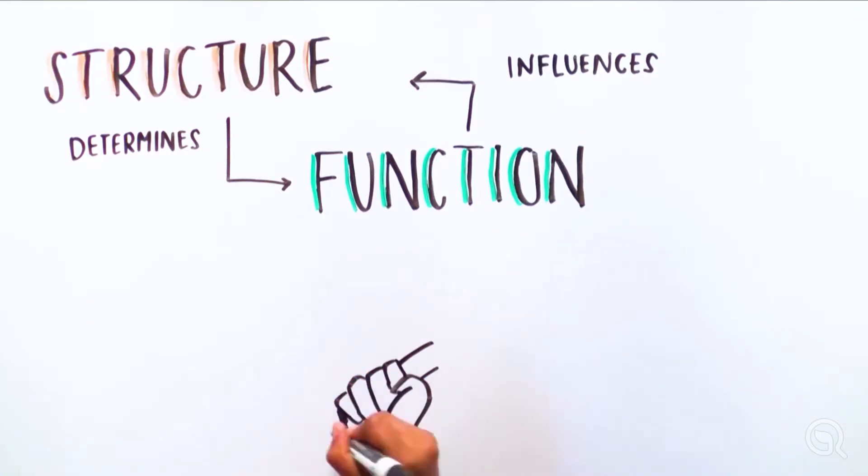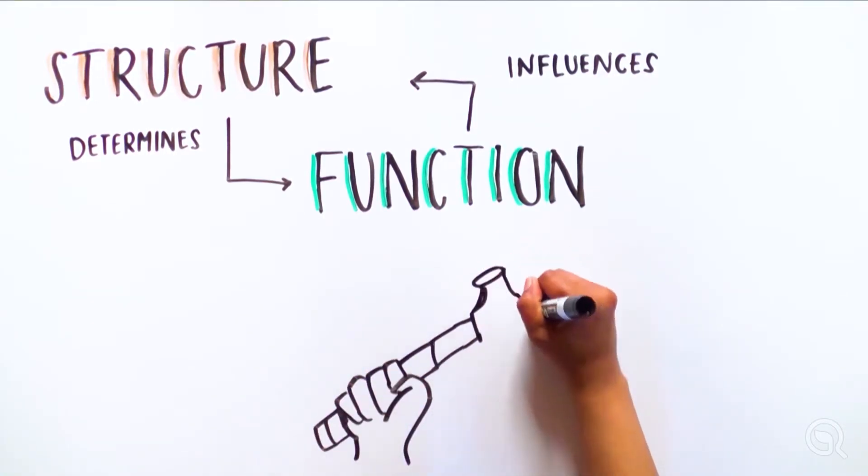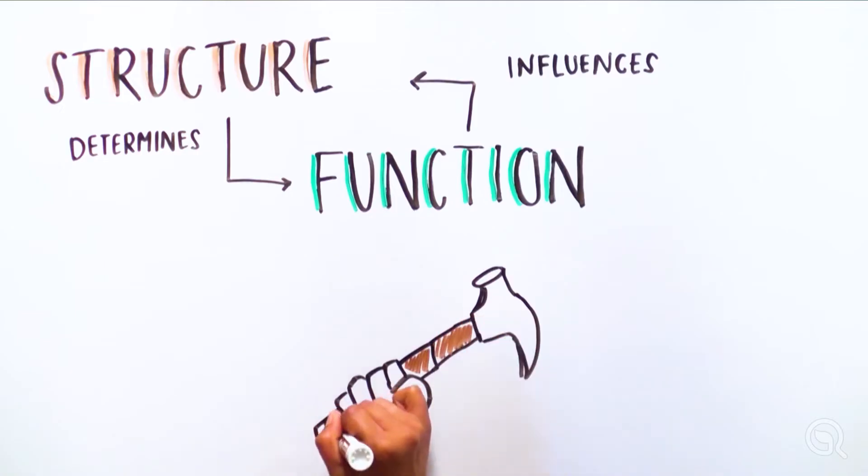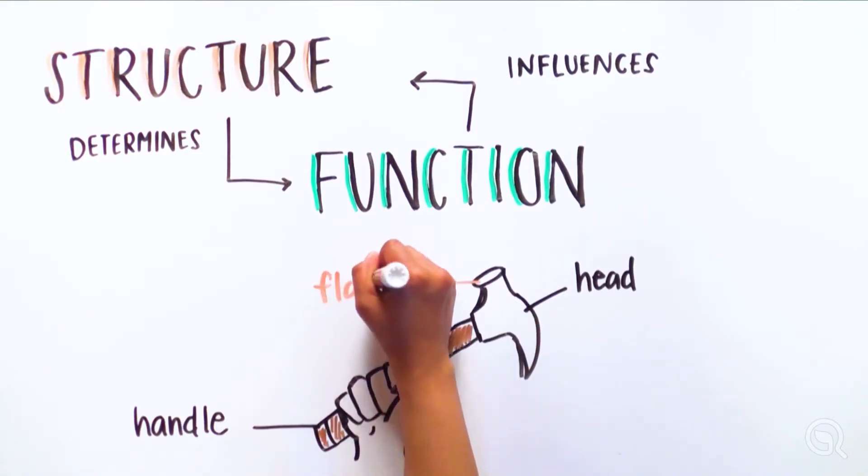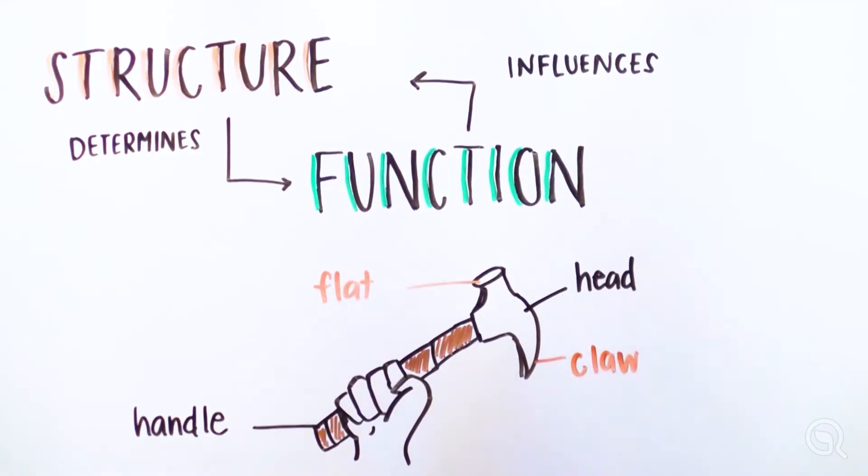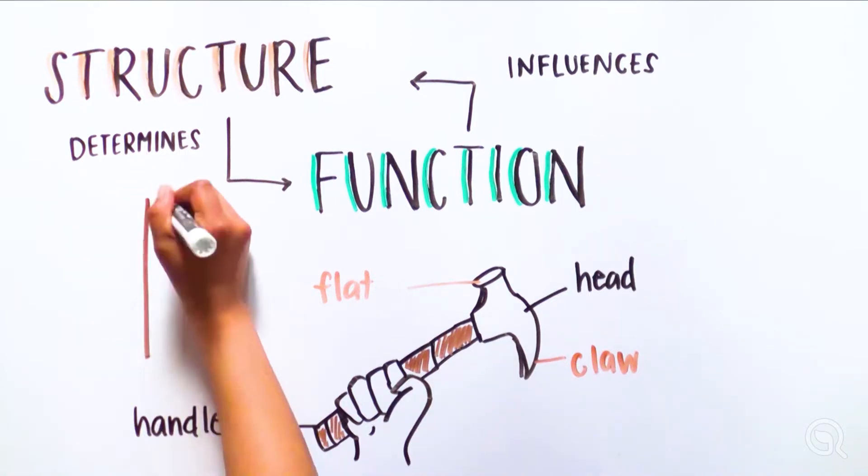Look at an everyday object like a tool. A hammer is a handheld tool with a head and a handle. The long handle allows it to be easily grasped. There are two opposite ends to the metal head, one flat and one claw. Each end has a unique shape to fit a specific function, but not both. This is their structure.